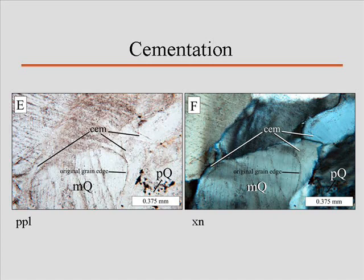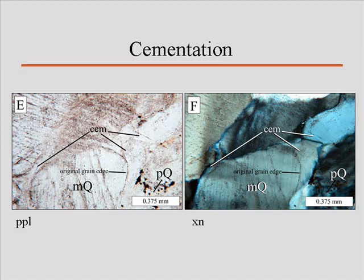See if you're paying attention: if the cement and the grain are in optical continuity, what does that mean as you rotate the stage under cross-polars? They both go extinct at the same point, because they are essentially the same crystal. That's pretty cool. Now, a lot of times when you look at a thin section of a quartz arenite sandstone, what you'll notice is really sharp angular grain contacts. Many people would look at this and say it's an angular quartz grain.